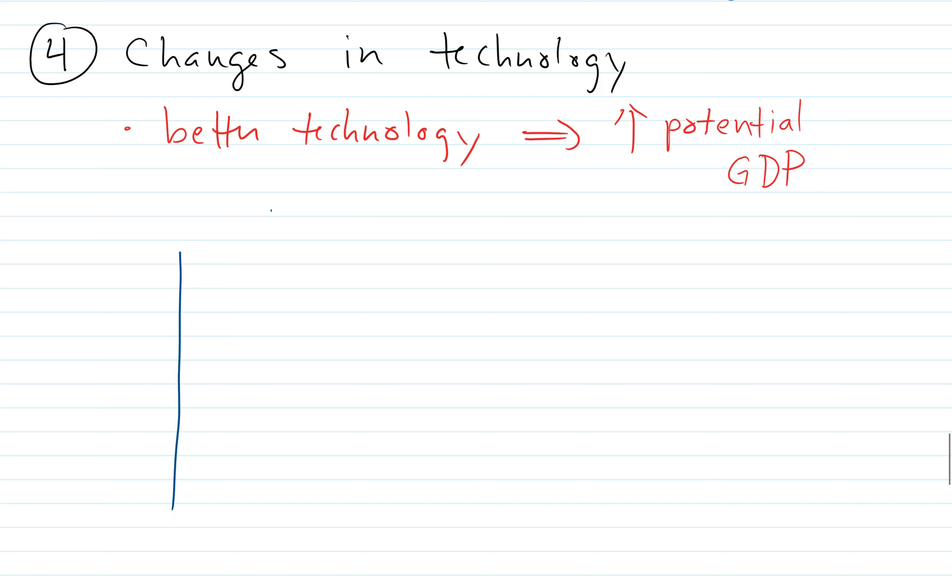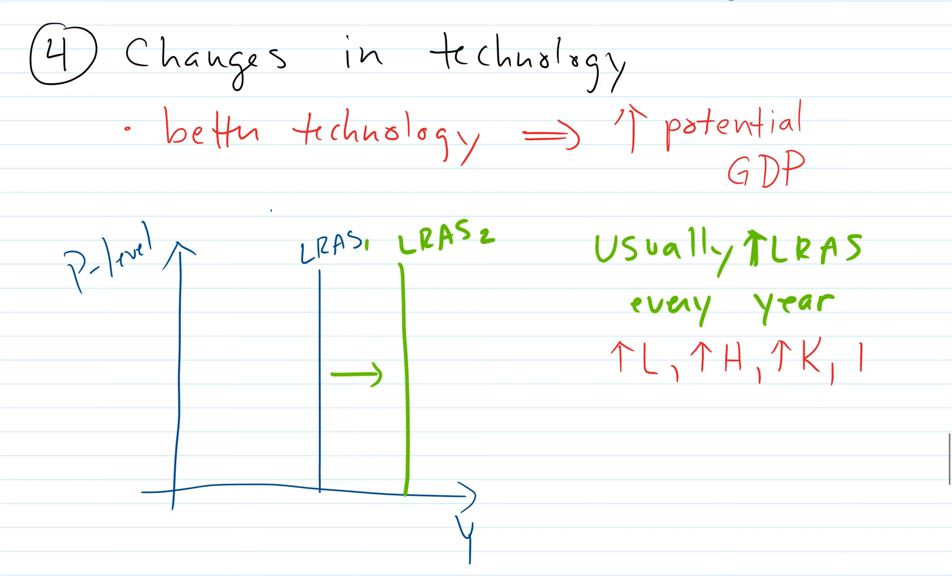We have our long-run aggregate supply curve. In a typical year, usually we'll find it'll be going up. Generally, our ability to produce is almost always going up. It could even be going up during a recession. Usually long-run aggregate supply is going up year after year. Why? We got more labor, more human capital, more capital, and more tech.